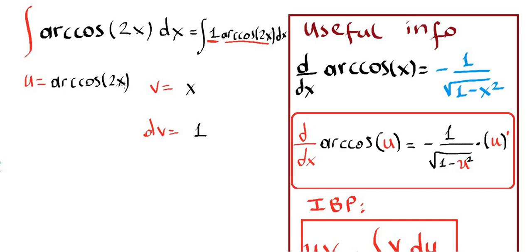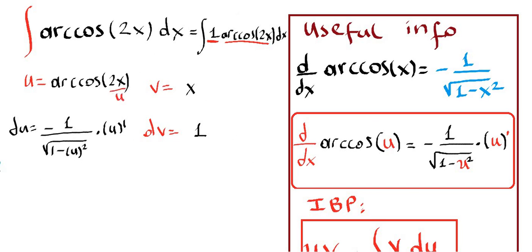Here our u is 2x. Applying this, our du will be negative 1 over the square root of 1 minus u squared times u prime. Since u is 2x, then 2x squared gives us 4x squared, and the derivative of u, which is the derivative of 2x, gives us 2. So du will be negative 2 over the square root of 1 minus 4x squared, dx.